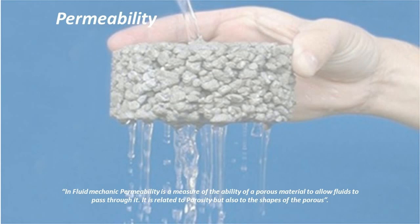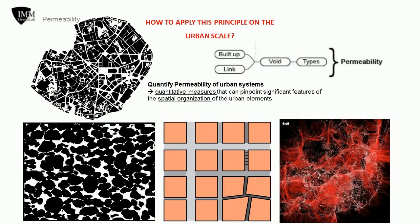In fluid mechanics, permeability is a measure of the ability of a porous material to allow fluids to pass through it. Permeability is related to porosity, but also to the shapes of the pores. In urban studies, permeability describes the extent to which urban form permits or restricts movement of people, vehicles, and material and immaterial flows. IMM considers permeability as a compactness attribute which quantifies the level of organization of the urban texture, emerging from self-organized and synchronized states between the basic elements of the urban system. Permeability emerges by the combination and synergetic integration of volumes, links, voids, and type of uses.